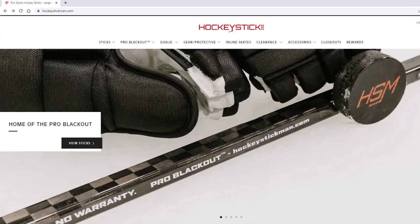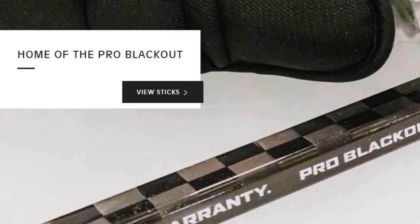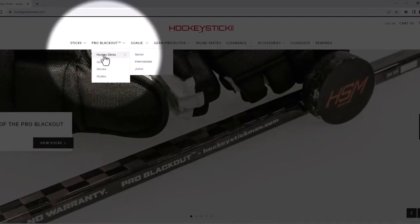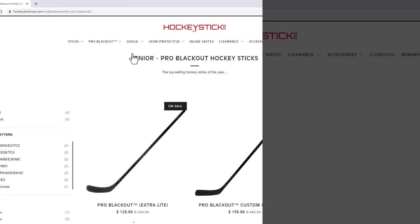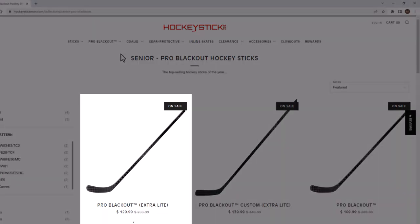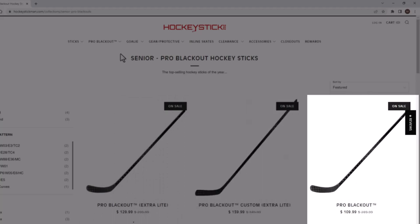Let's dig into some details on the Pro Blackout. First of all, Pro Blackout sticks are an exclusive product of HockeyStickMan.com. HockeyStickMan is the home of the Pro Blackout. Pro Blackout sticks come in senior, intermediate, and junior sizes, but I'll focus on the senior sticks. As you can see, HockeyStickMan offers the Pro Blackout Extra Light for $130, the Pro Blackout Custom Extra Light for $140, and the Standard Pro Blackout for $110.